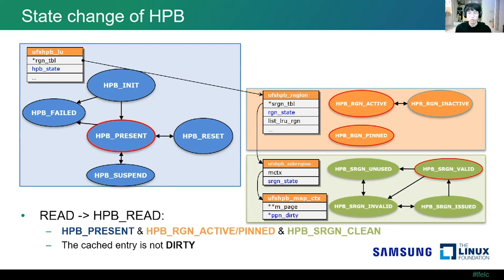Why is the mapping entry could not be used even if all those states are valid? Some mapping entries become dirty because of write and discard commands. If those commands are issued to user data whose mapping entry is already cached, HPB directly sets those mapping entries as dirty.